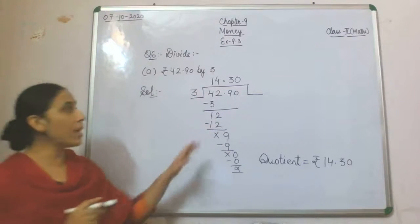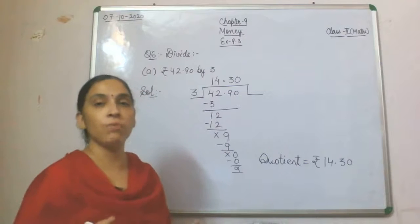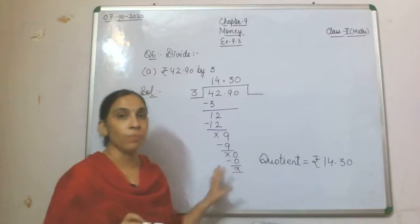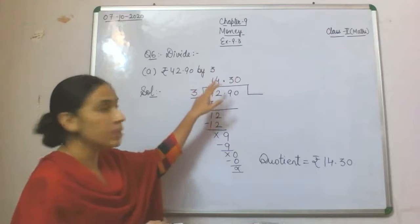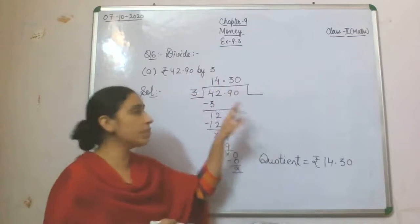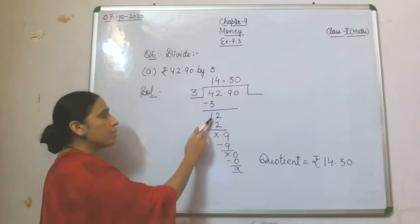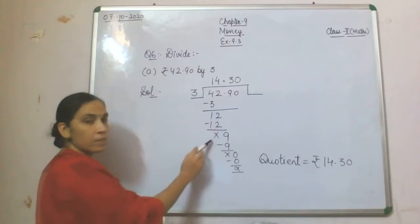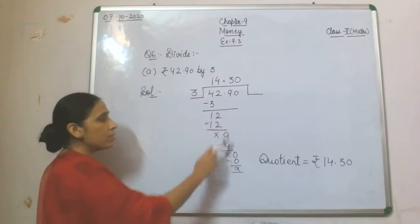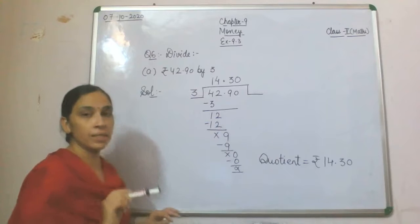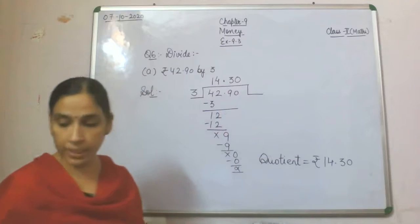It is not necessary that you will only do 2-digit decimal division. You can get 3-digit, 4-digit — whatever. The method is the same. You have been given rupees 42 and 90 paisa divided by 3. You write 42.90 in the form of division and start: 3 ones are 3, 1 remaining; 2 gets down; 3 fours are 12, nothing remaining; point goes into quotient; 9 gets down; 3 threes are 9; 0 gets down; 3 zeros are 0. Quotient is rupees 14 and 30 paisa.